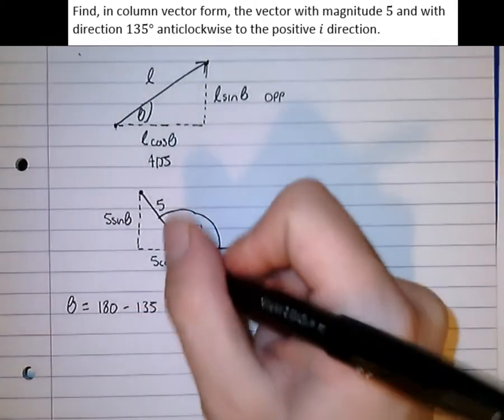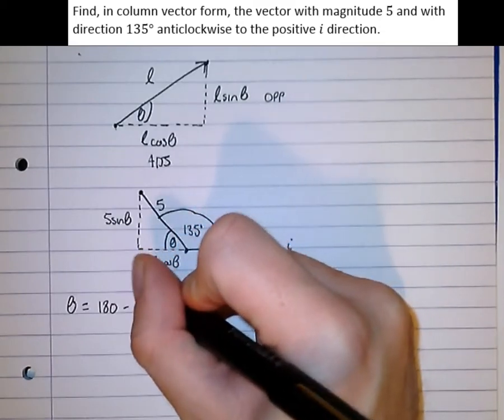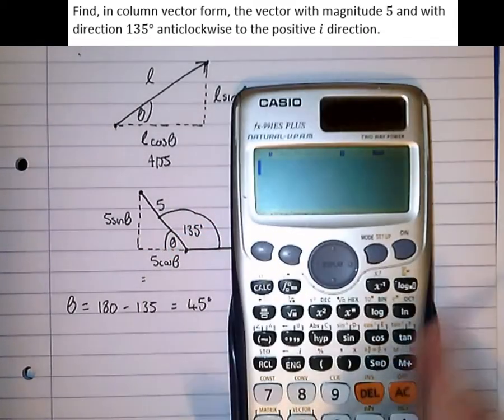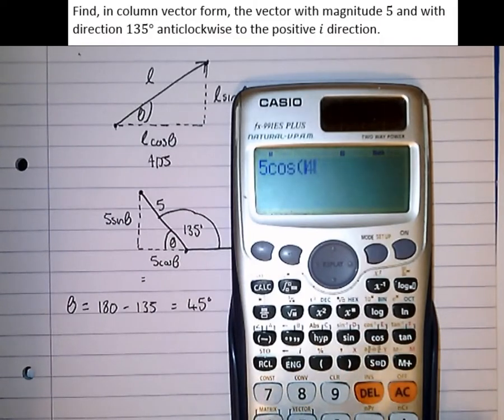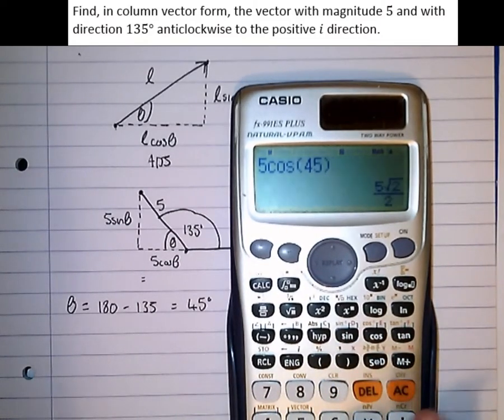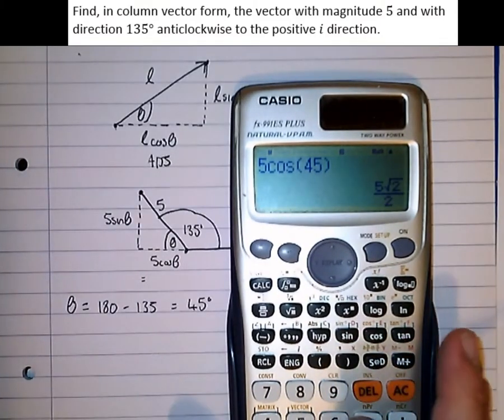OK, so this one here, 5 cos theta, or 5 cos 45, which is equal to 5 root 2 over 2.